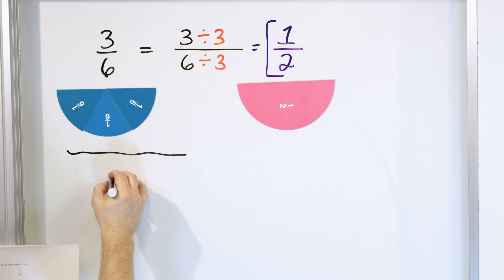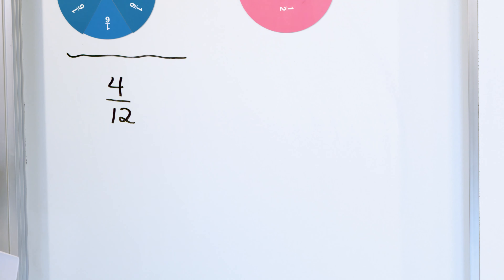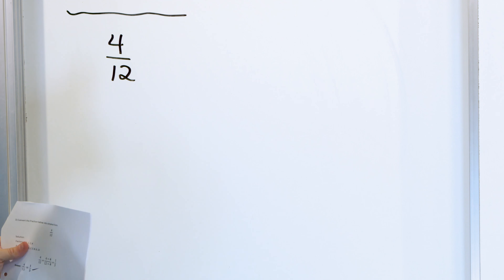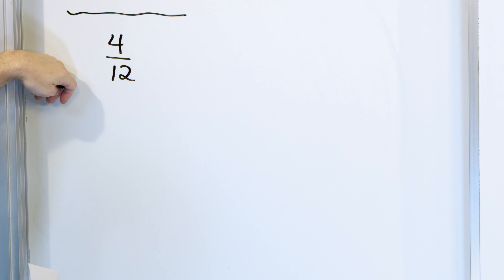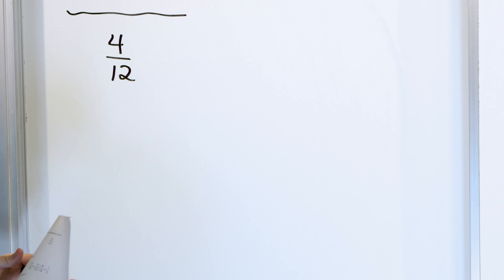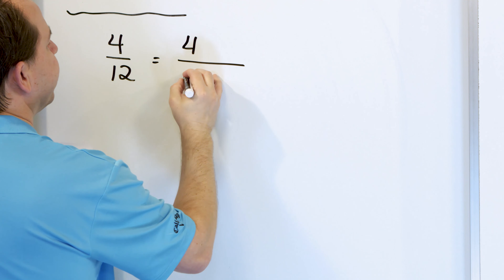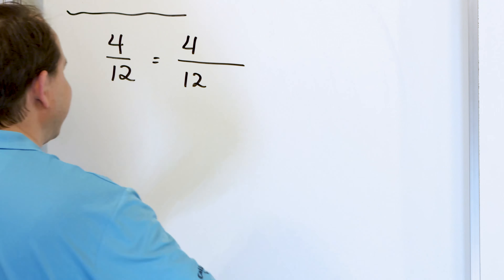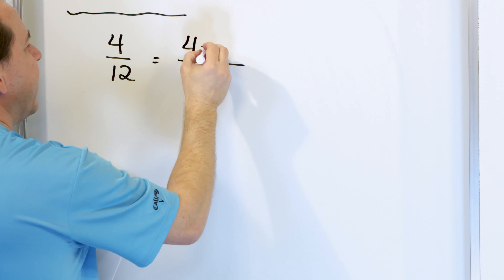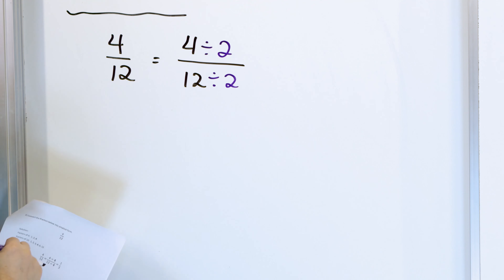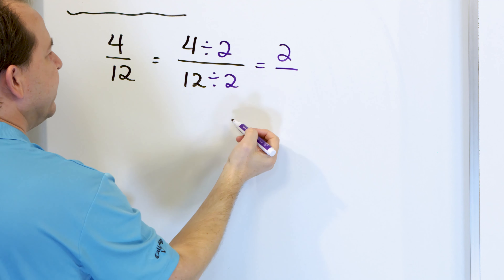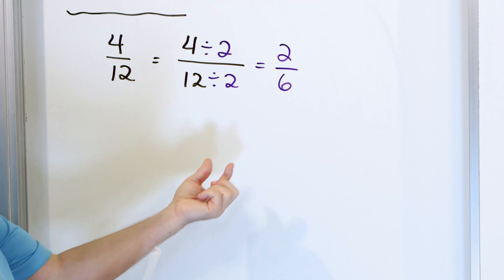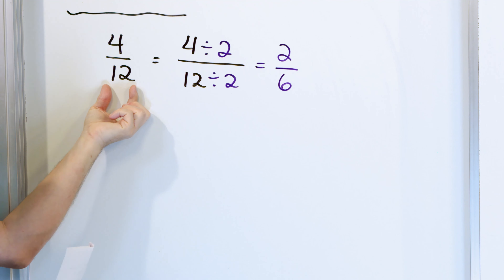Let's say we have the fraction four-twelfths. Is this in lowest terms, or can we simplify it? What you need to ask yourself is: can I divide the top and bottom by something? I noticed that four and twelve are both even numbers, so I can divide the top by two and the bottom by two. Four divided by two is two, and twelve divided by two is six. So the fraction two-sixths is exactly the same thing as four-twelfths.